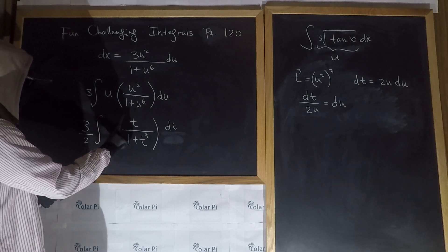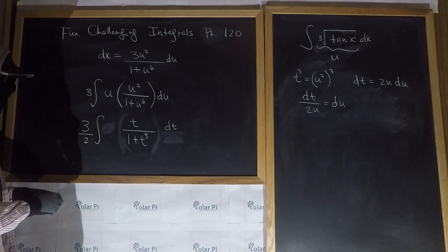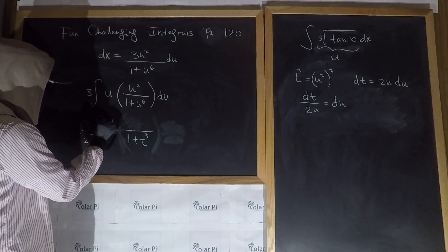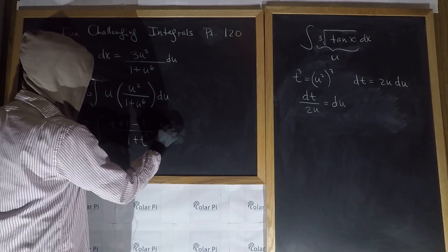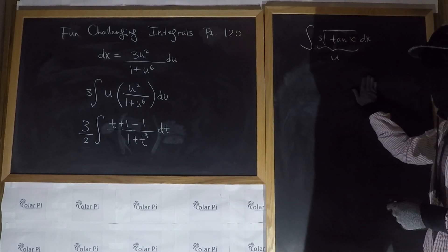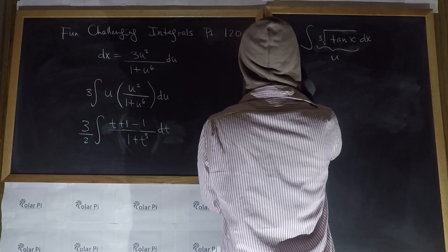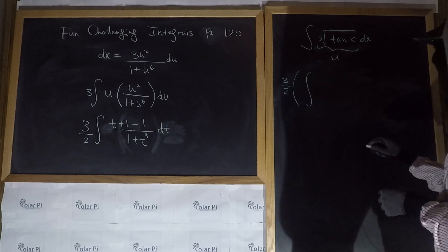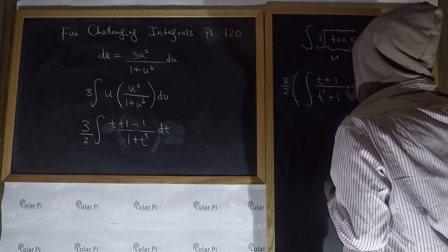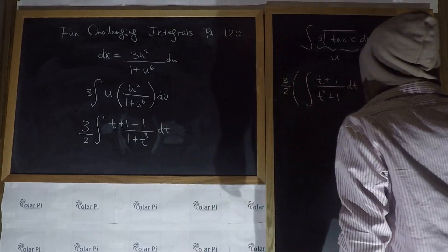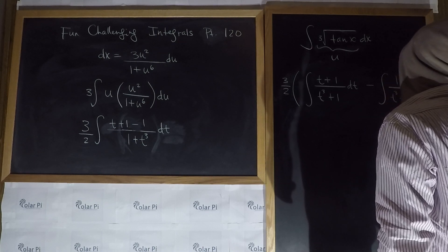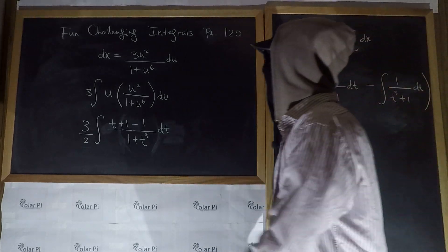Our integral now simplifies nicely. I'm going to write the numerator t as (t + 1) minus 1, then split this into two integrals. So we get three-halves times the first integral of (t + 1) over (t³ + 1) dt, minus the integral of 1 over (t³ + 1) dt.